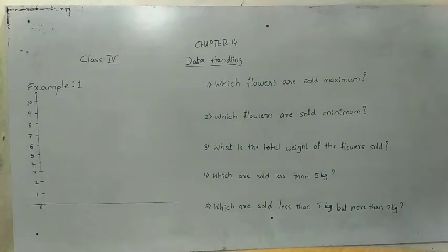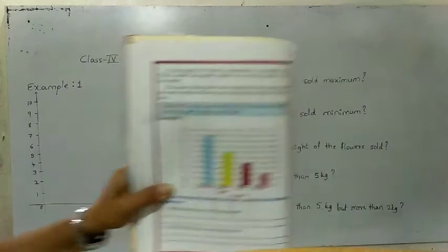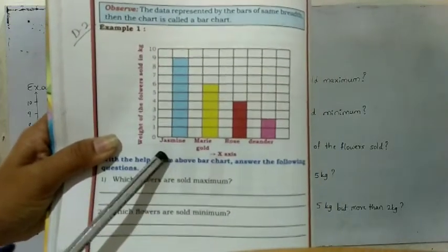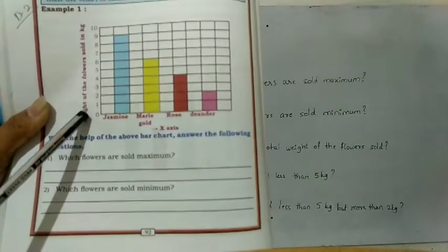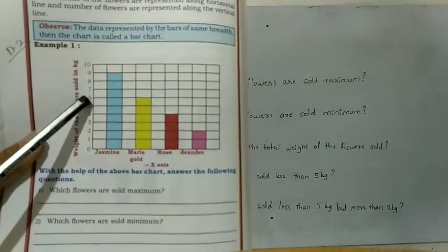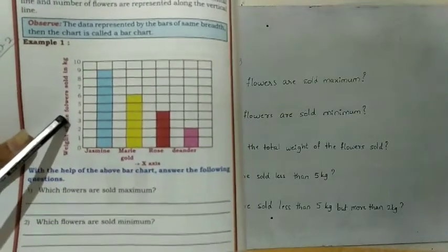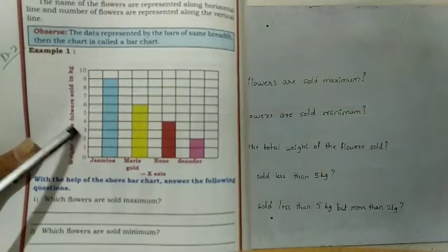All of you look in your textbook at page number 94. Four flowers are given: jasmine, marigold, rose, and diana. The weight of the flowers sold in kg is: jasmine 9 kg, marigold 6 kg, rose 4 kg, and diana 2 kg.